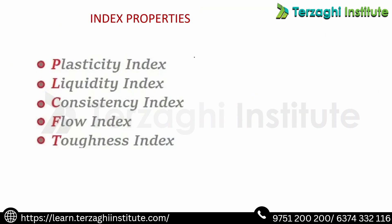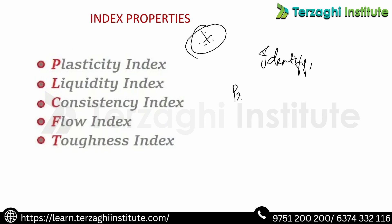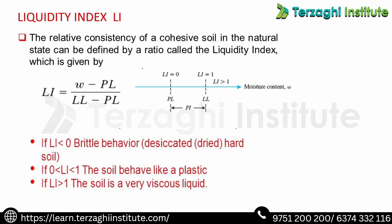Index properties are used to identify and classify soil based on its properties and behavior. Index properties include plasticity index, liquidity index, consistency index, flow index, and toughness index. First is the liquidity index.